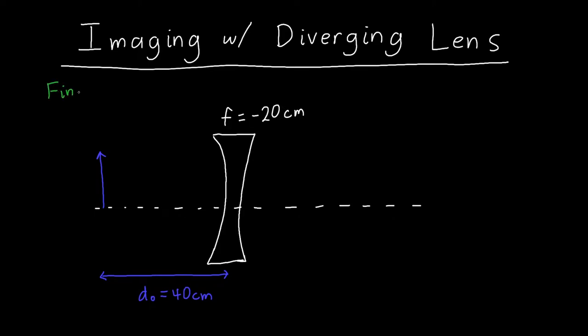Let's say that we want to find the rays in this system, we want to find where the image is located (di), we want to find the magnification, and whether the image is real or virtual.